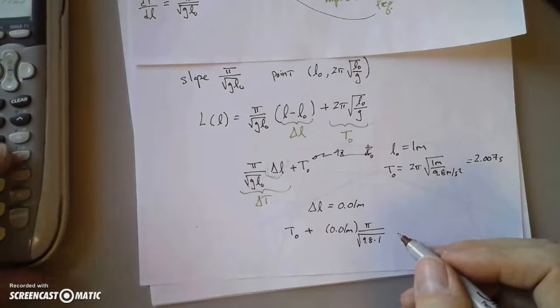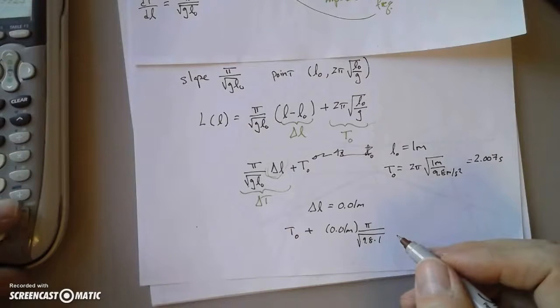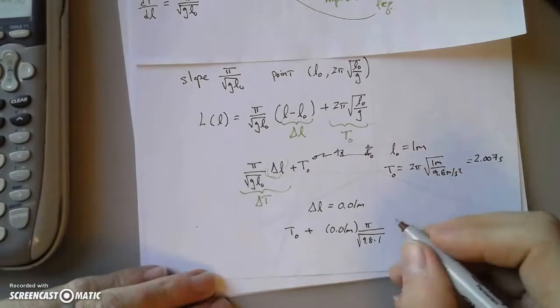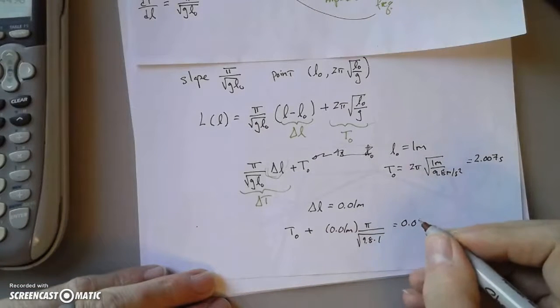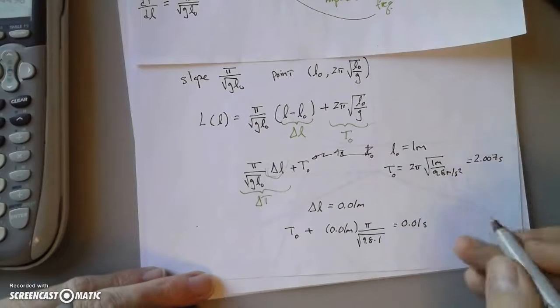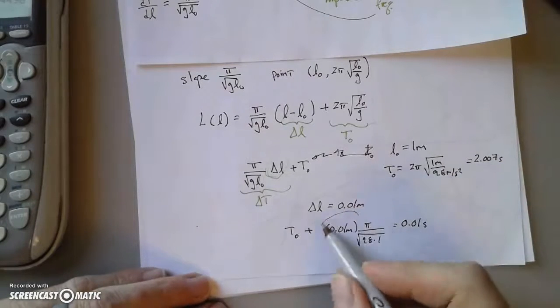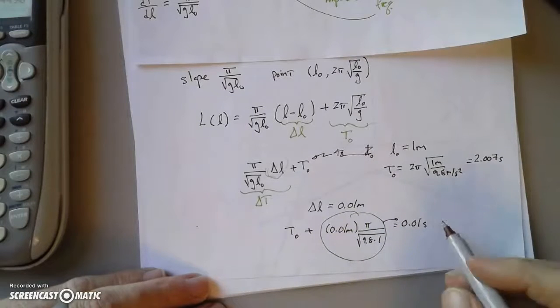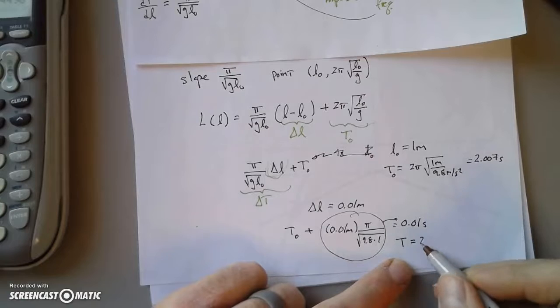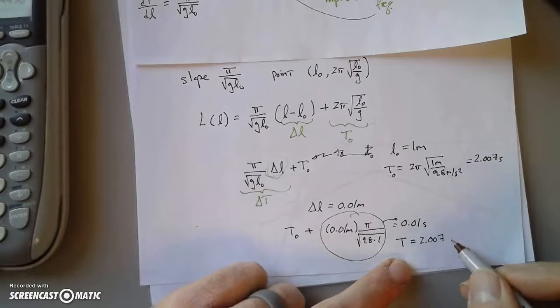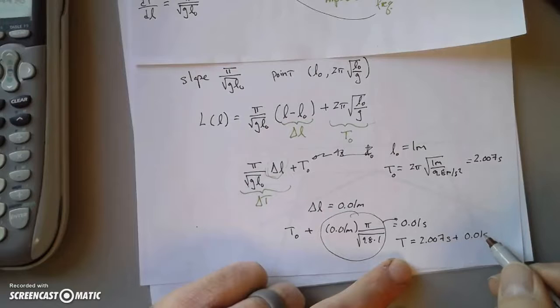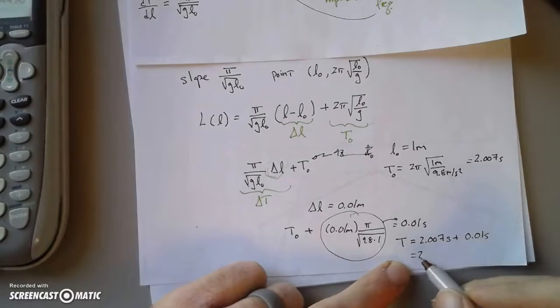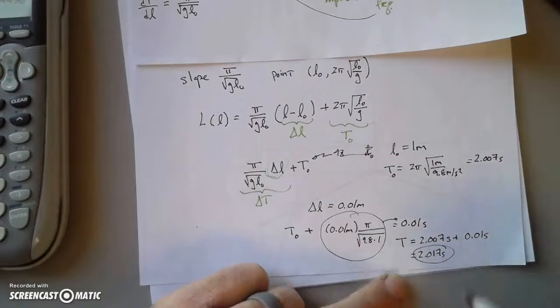So we'd have T naught plus the change in length times pi over root 9.8 times 1 meter. Let's figure out what that is. Square root 9.8, 1 over that times pi would equal 0.01 seconds. So this is, this would be the change. So our new period would be 2.007 seconds plus 0.01 seconds. So it would be 2.017 seconds.